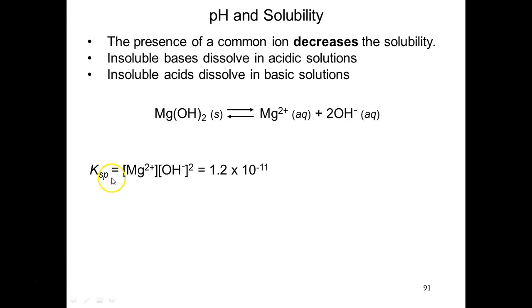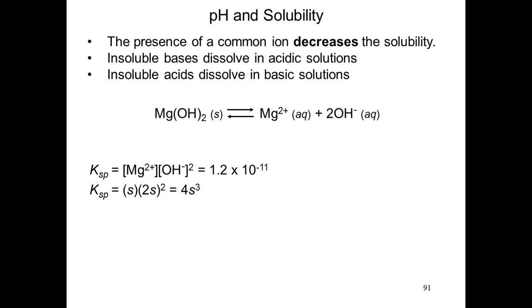What the solubility product represents is the point at which you have a saturated solution and the maximum concentration of both species in solution, before you surpass your solubility product and before a precipitate would have to form. So the solubility product is representative of a saturated solution.